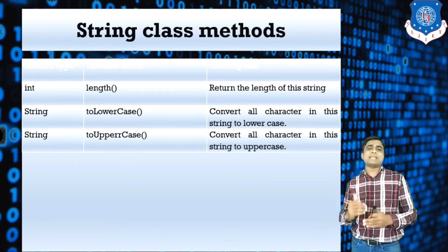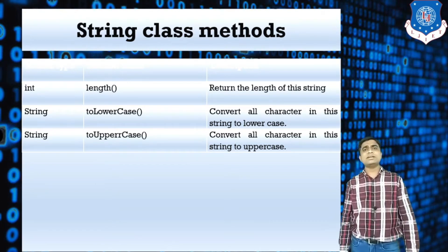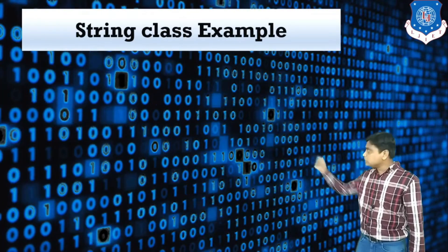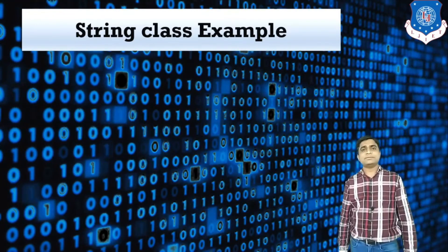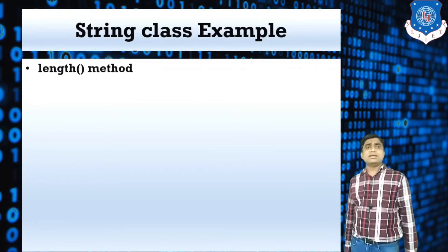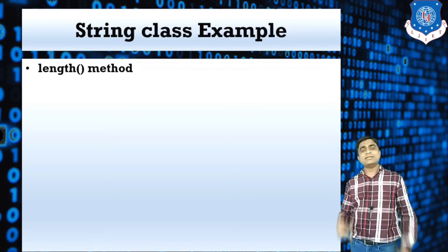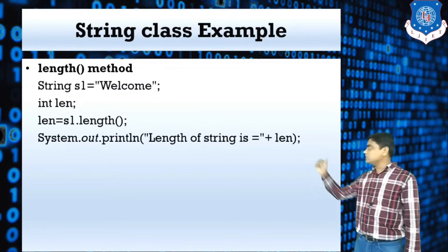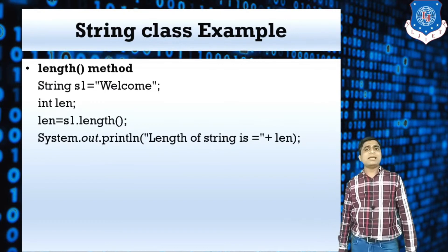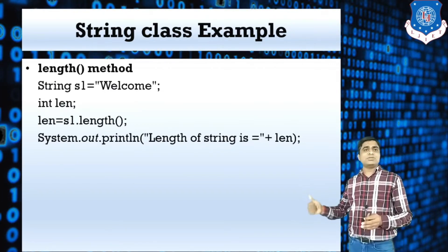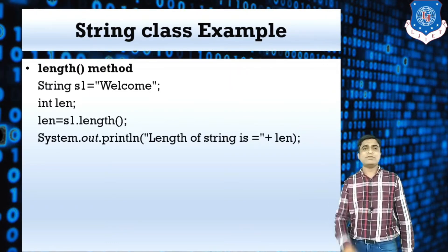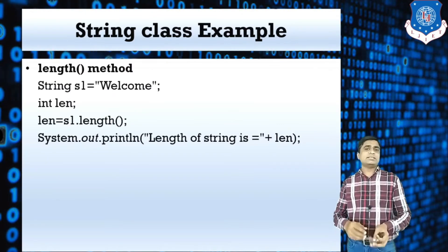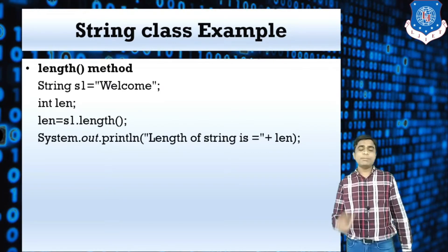Now let's look at different examples of String methods. Our first example is the length method — as mentioned, it returns the length of the string. Here, our string is 'welcome'. Using an integer variable length equals s1.length(), the value of length is the number of characters in 'welcome', which is seven. This will print: length of the string is equal to seven.